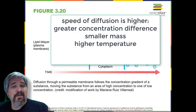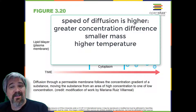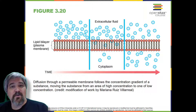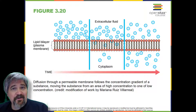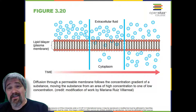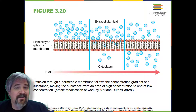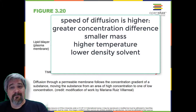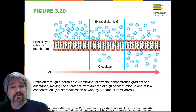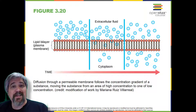Temperature: higher temperatures increase the energy and therefore the movement of the molecules, increasing the rate of diffusion. Because temperature is a measure of the average molecular kinetic energy of the molecules of a substance. Solvent density: as the density of the solvent increases, the rate of diffusion decreases. The molecules slow down because they have a more difficult time getting through the denser medium.